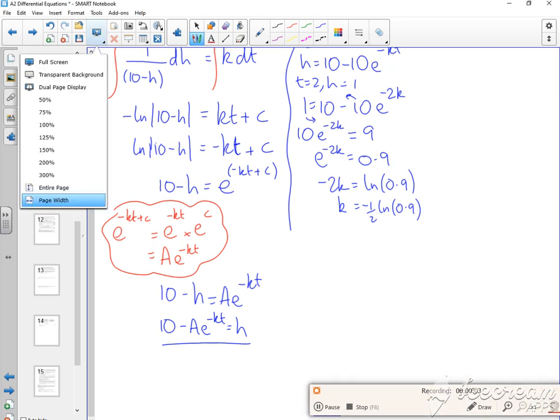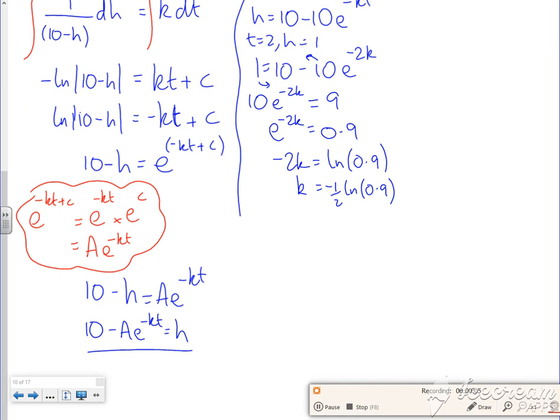Good timing because I completely forgotten about the five minutes. Right, so I've got my H, it's 10 minus 8E to the, now it's minus already so minus minus makes a plus, so it's a half ln of 0.9 times T. So that's my particular solution done.